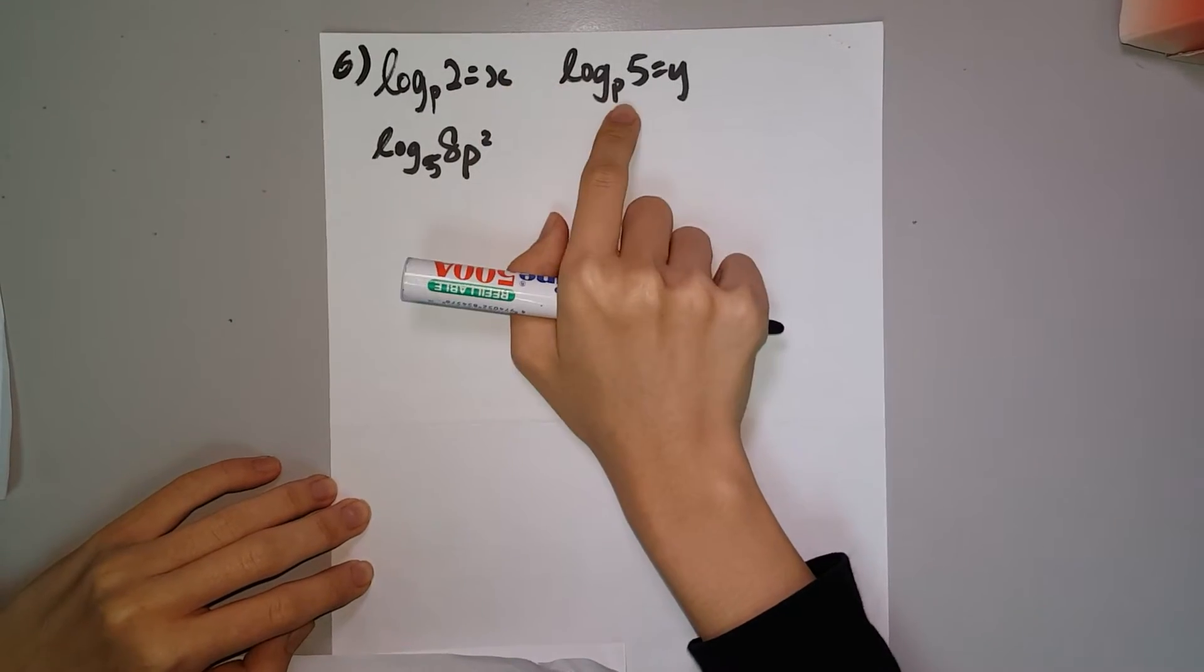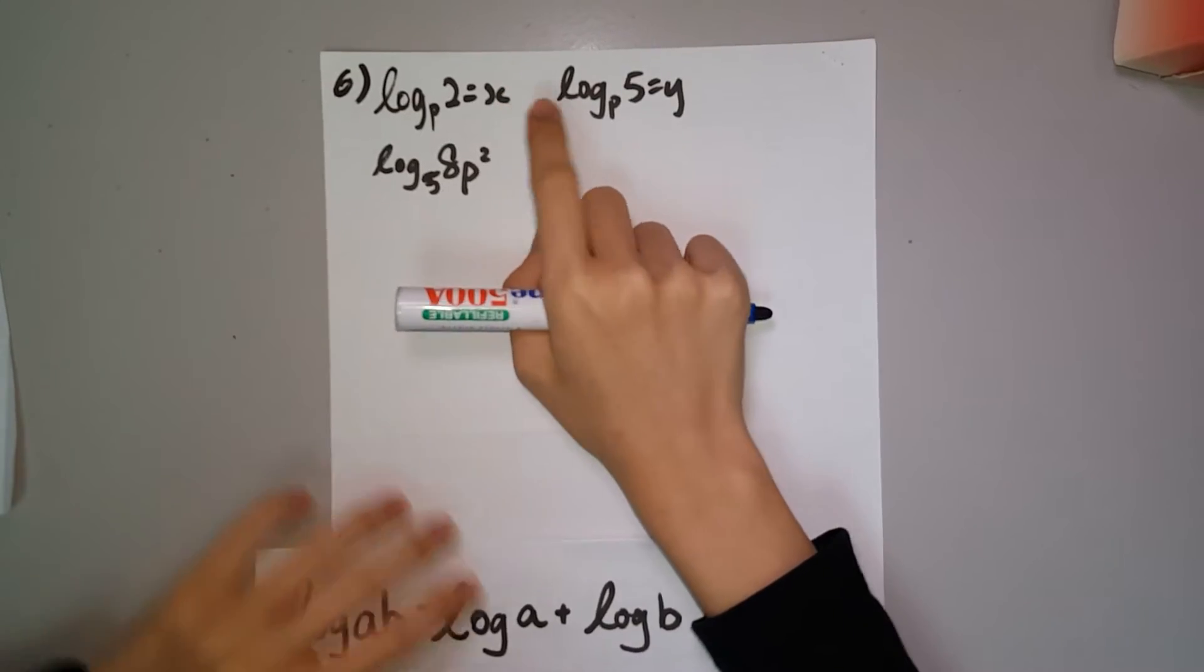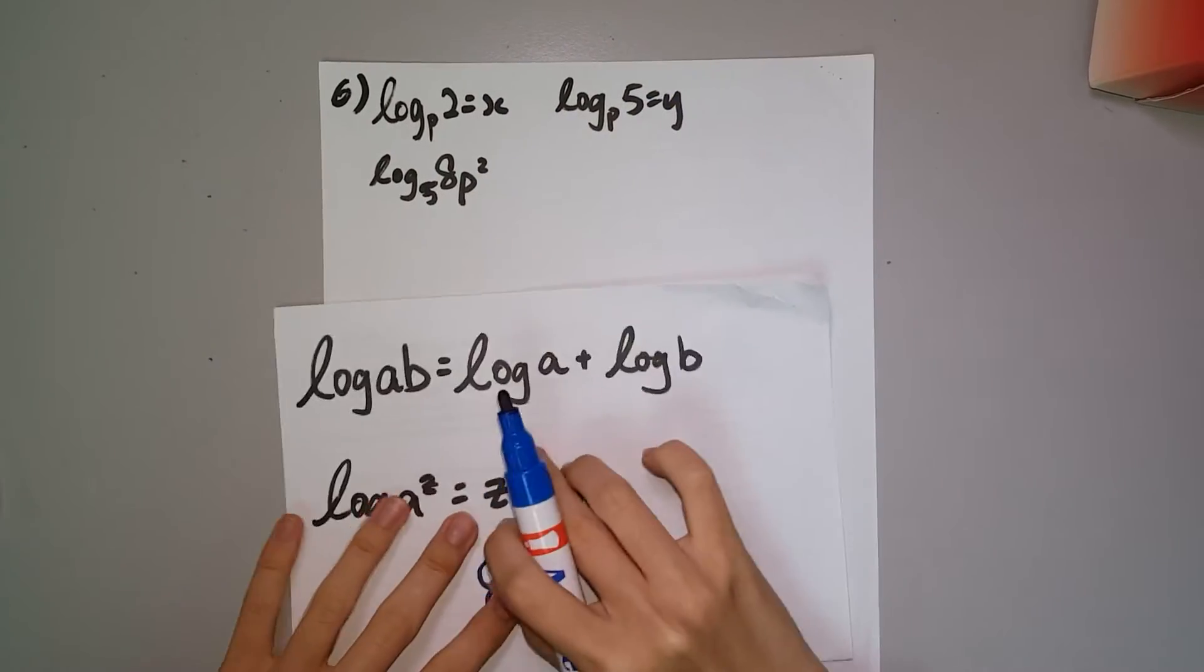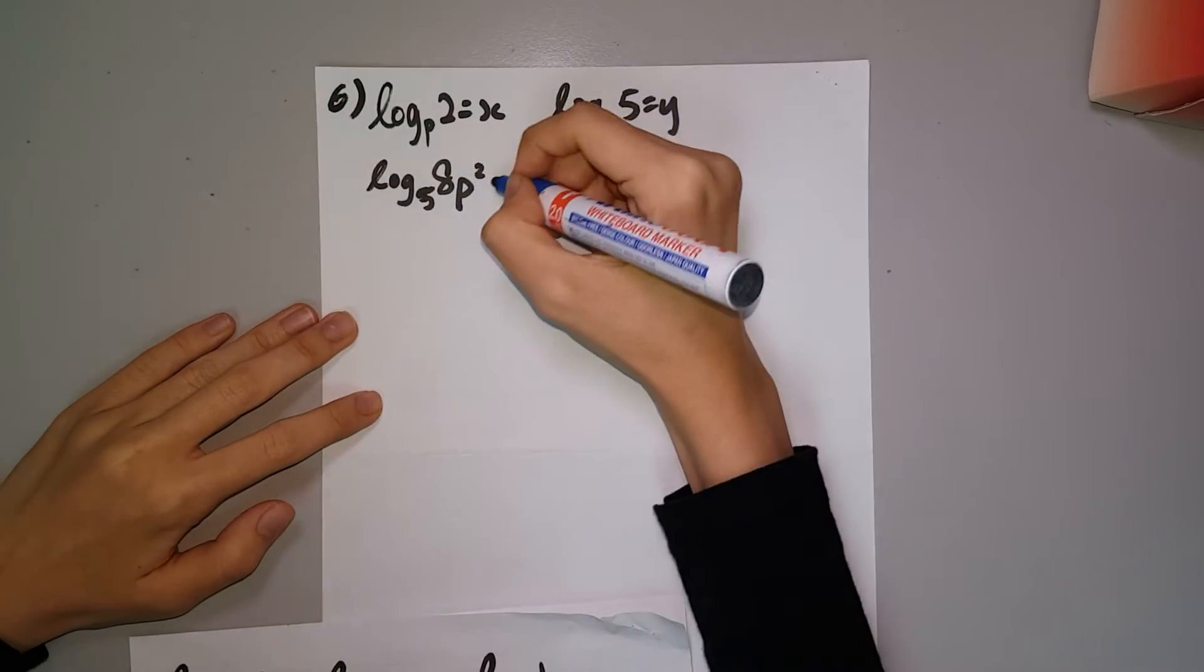So these are the equations given in the question. We have to express this into x and y. At first, we need to separate this using the rule log AB equals log A plus log B. So we separate it.